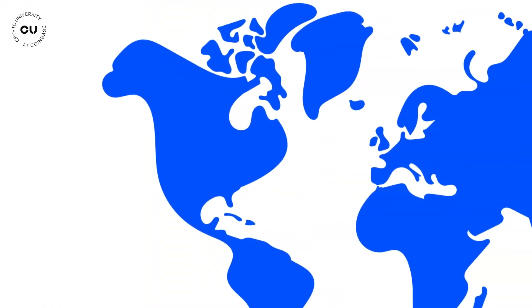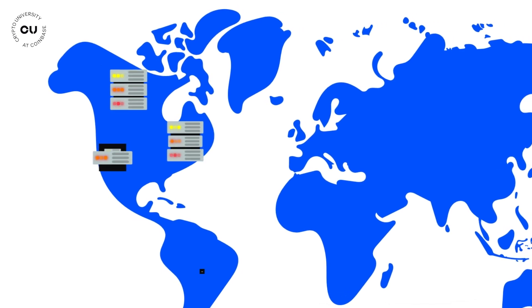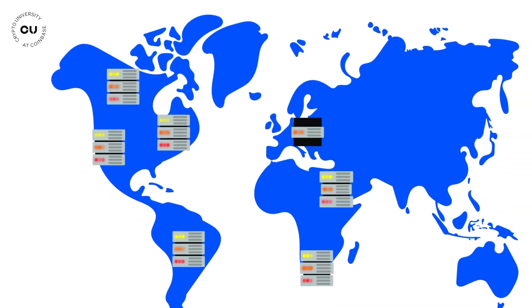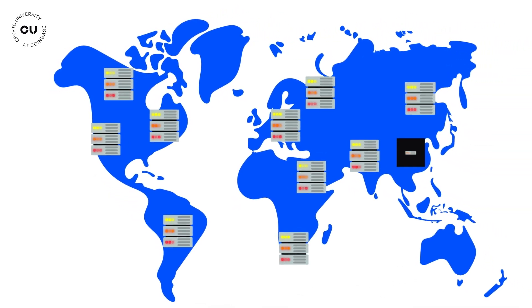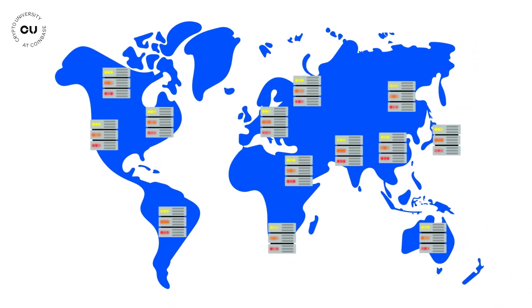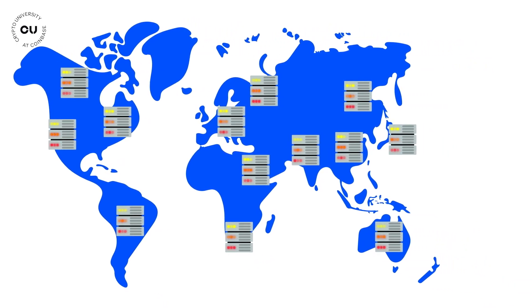So everyone who participates in the network has a copy of the ledger, and everyone's is secured by everyone else. The data is stored on many servers all over the world instead of just one server that you have to put a lot of faith in.